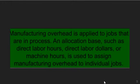Manufacturing overhead is applied to jobs that are in process. An allocation base such as direct labor hours, direct labor dollars, or machine hours is used to assign manufacturing overhead to individual jobs, because it is impossible or difficult to trace overhead costs to particular jobs. Manufacturing overhead consists of many different items ranging from grease used in machines to the production manager's salary. Many types of manufacturing overhead costs are fixed even though output fluctuates during the period.